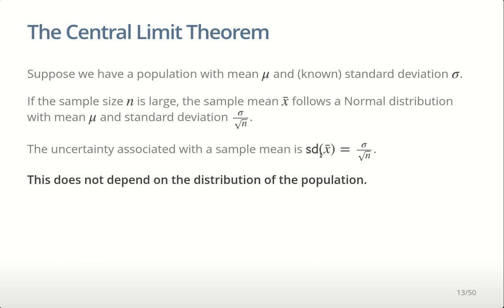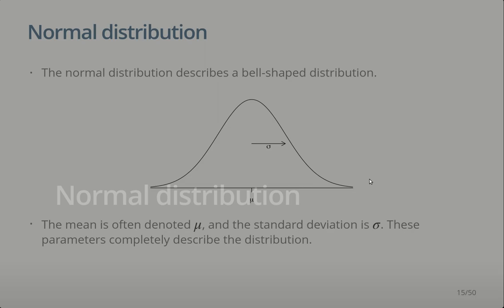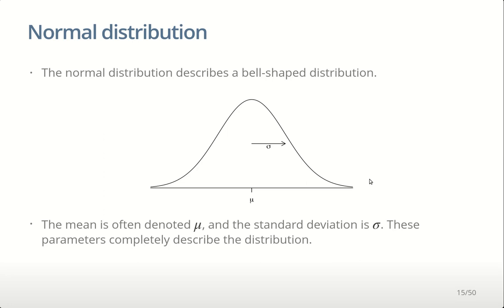This means we can describe uncertainties about any population, regardless of its shape, using a normal distribution. The normal distribution describes that nice bell shape and is described by just two parameters: the mean mu — where the mean, median, and mode are all at the same location — and the standard deviation as the measure of spread. Those parameters completely describe the distribution. Once you know the mean and standard deviation, you know everything you need to know.